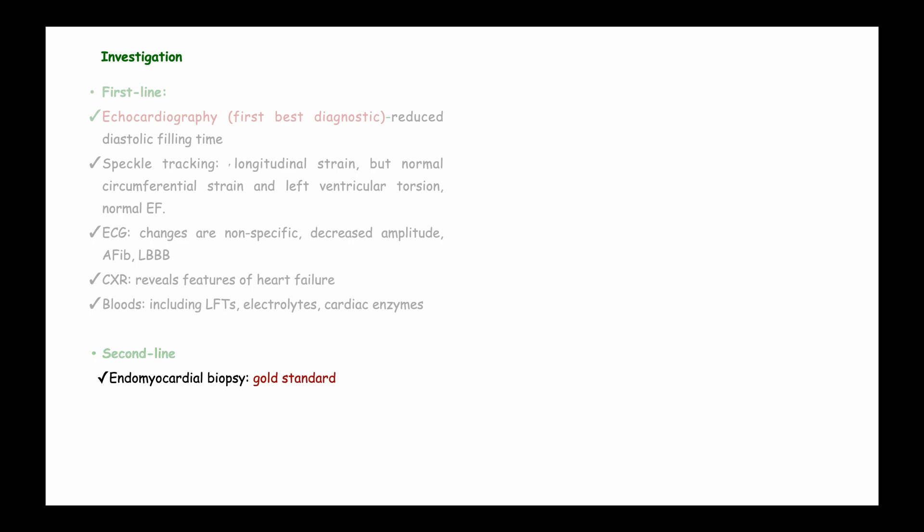For second-line investigations, endomyocardial biopsy is the gold standard in diagnosing restrictive cardiomyopathy. It reveals the kind of deposits in the myocardium, whether amyloid plaques, sarcoidosis, or iron. CT, MRI, and diagnostic angiography can also be used, particularly to distinguish restrictive cardiomyopathy from constrictive pericarditis — where the problem is with the pericardium and is correctable with surgery.